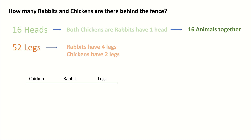Let's first assume that all 16 animals are chickens. That means that there are no rabbits, and the total number of legs is 16 times 2, because chickens have two legs, which is 32 legs. But we need 52 legs, so that means we need 20 more legs.